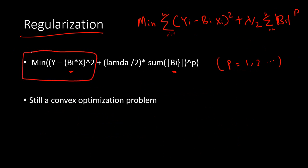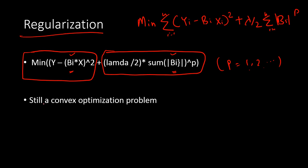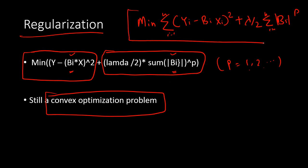We have the least squares function as our cost function. In simple optimization, we minimize the least squares function. When we add regularization, we add another term to the optimization function. This added term is lambda divided by 2, multiplied by the summation of the modulus of the betas raised to the power p, where p can be 1 or 2. This is still a convex optimization problem, so the same algorithms can be used. The new cost function is: the summation of the squared errors plus the regularized term. Lambda controls how much the beta parameters should be reduced.